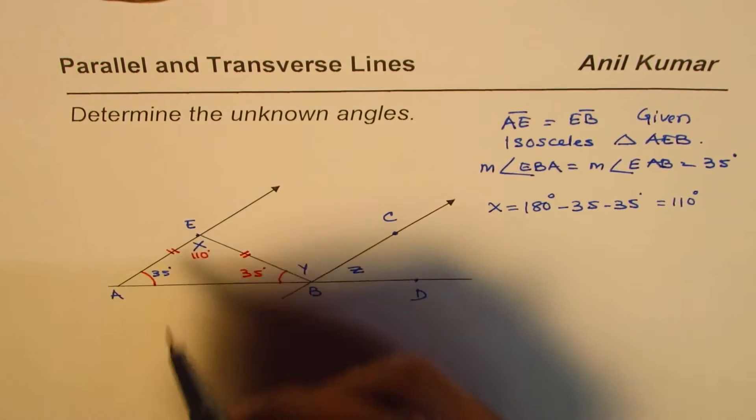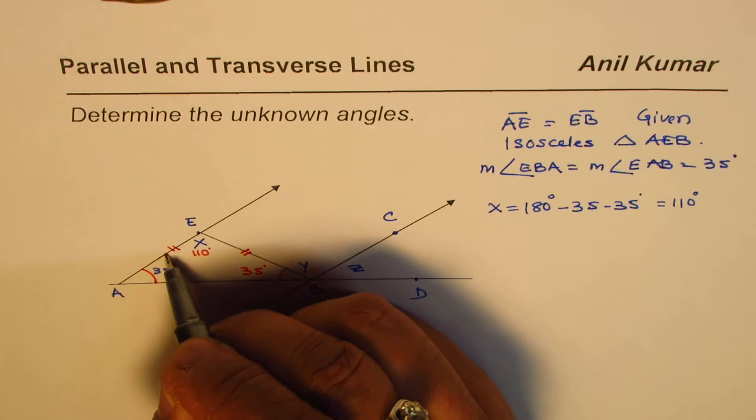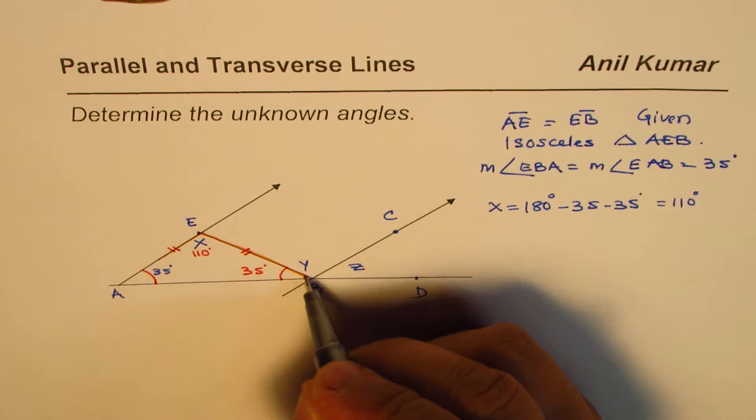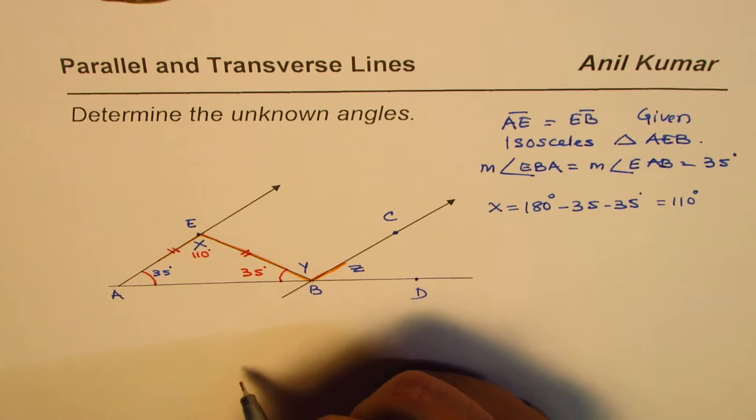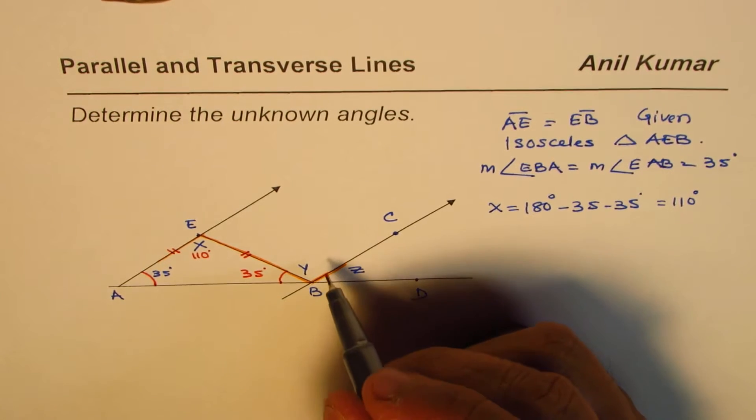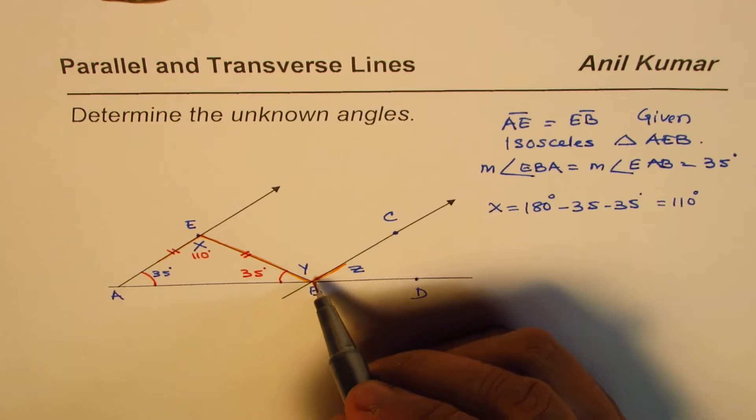Do you look for patterns? Parallel lines, so this is a parallel line, transverse line. So this is kind of the situation. So this becomes an alternate angle.